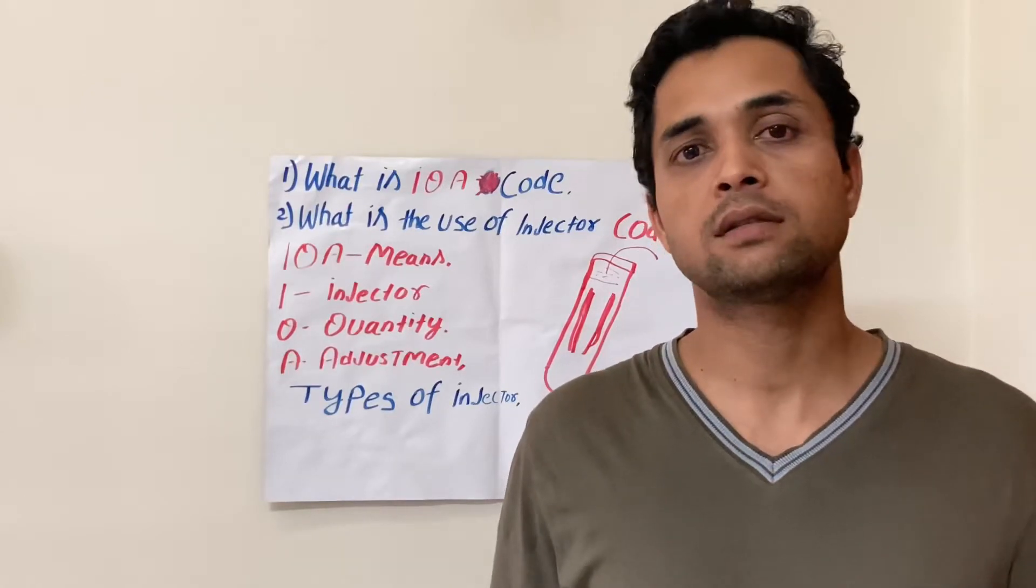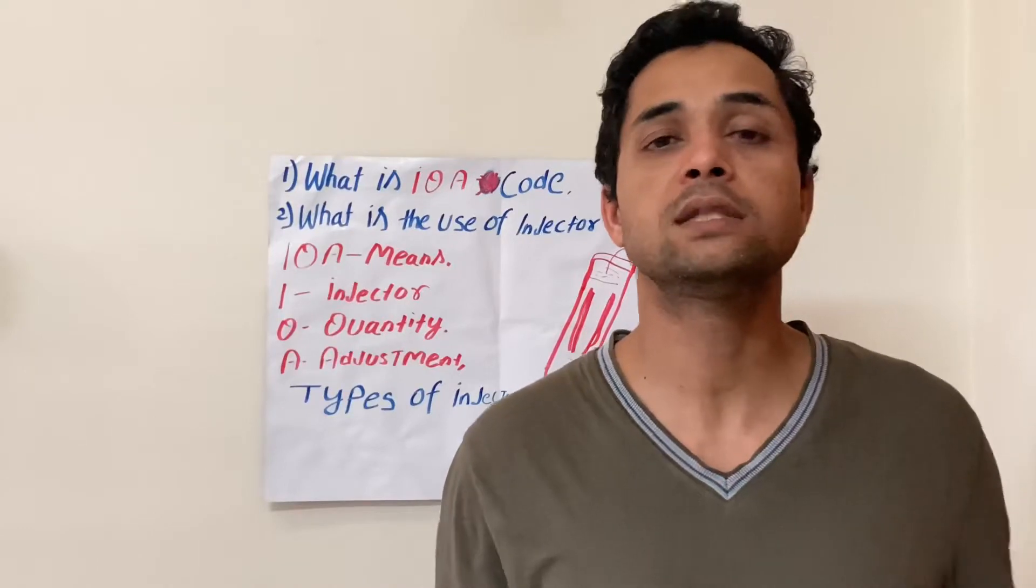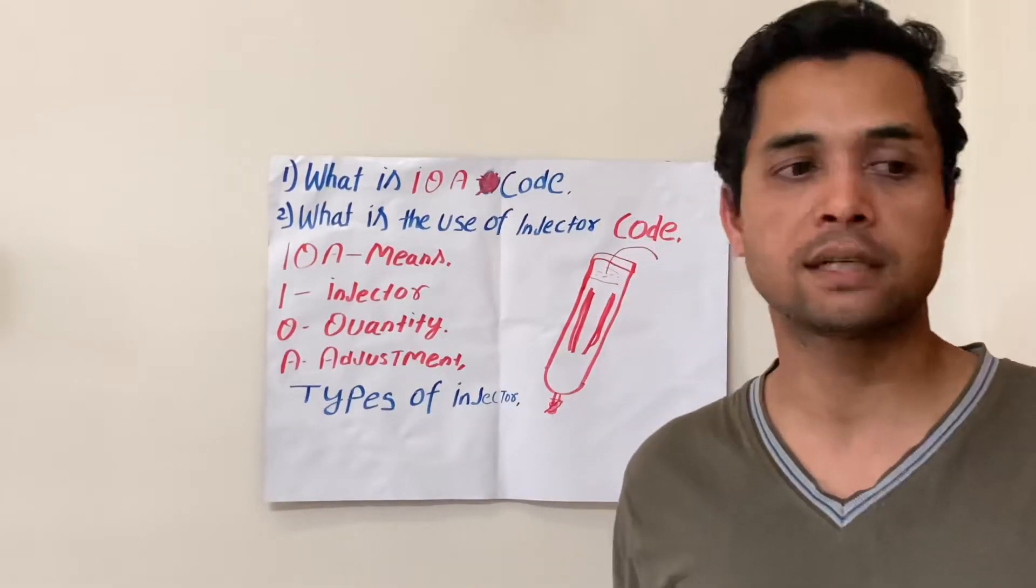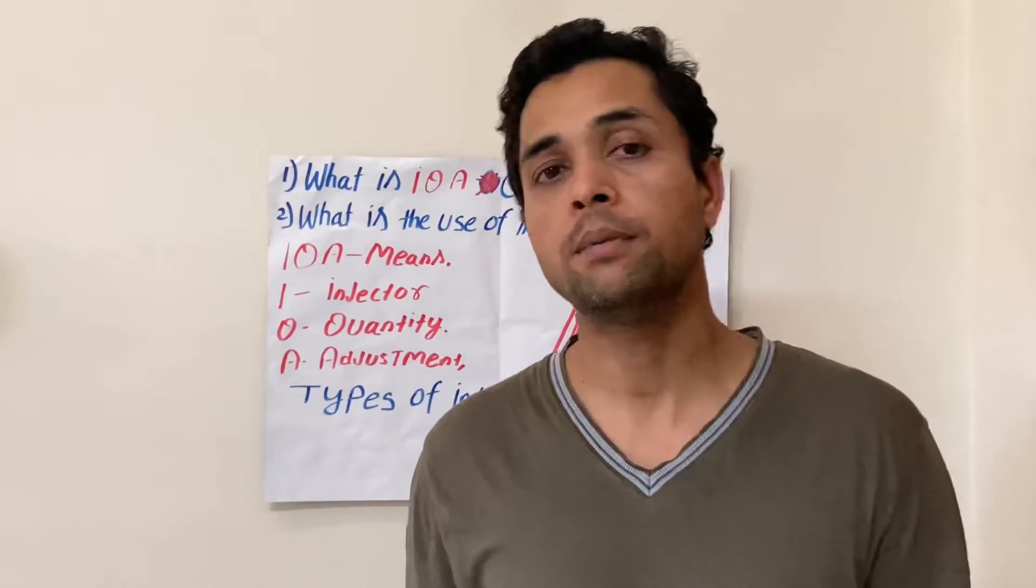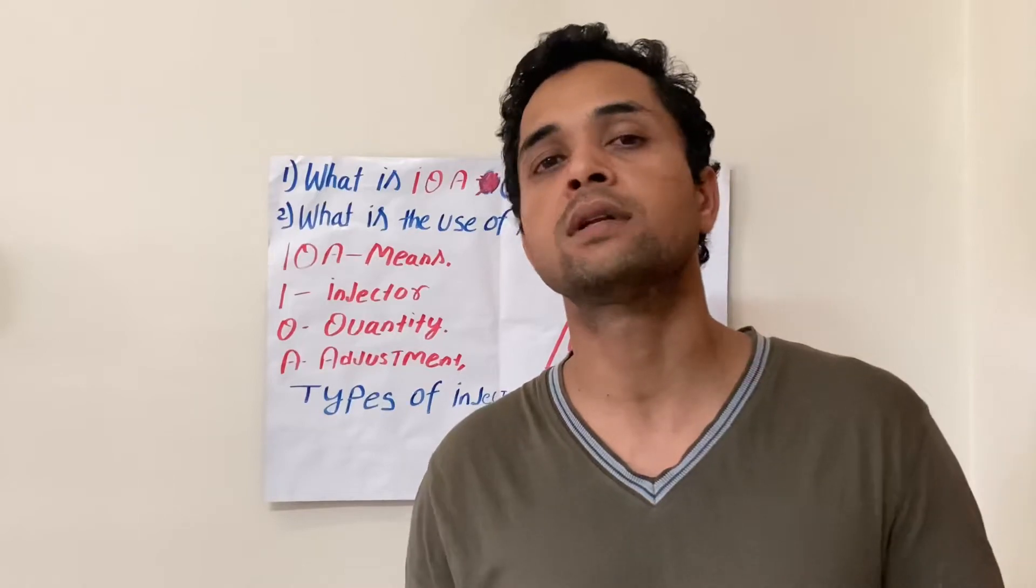This is why injectors have to be coded. Coding is fundamentally the most important aspect for common rail injector calibration to deliver the correct quantity of fuel at the right time during combustion stroke to meet emission standards.